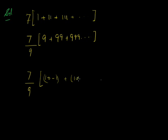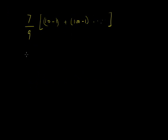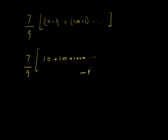We get values 10, 100, 1000 and so on, which are in GP. Therefore we can write 7/9 times (10 + 100 + 1000 up to N terms). The remaining part is minus 1, minus 1, minus 1 up to N terms, which means we subtract N from this quantity.